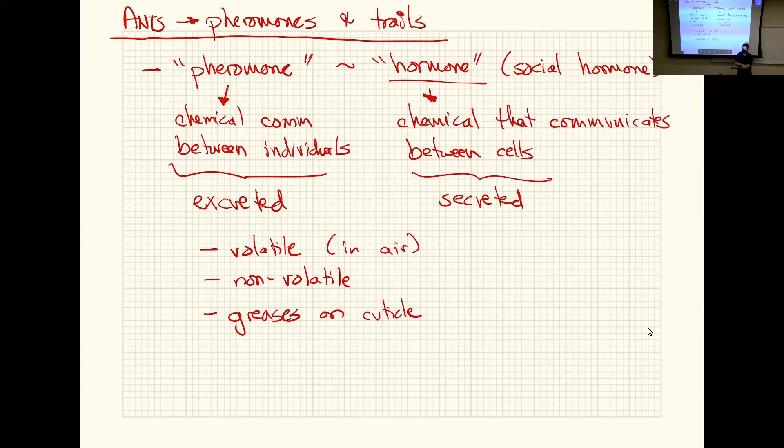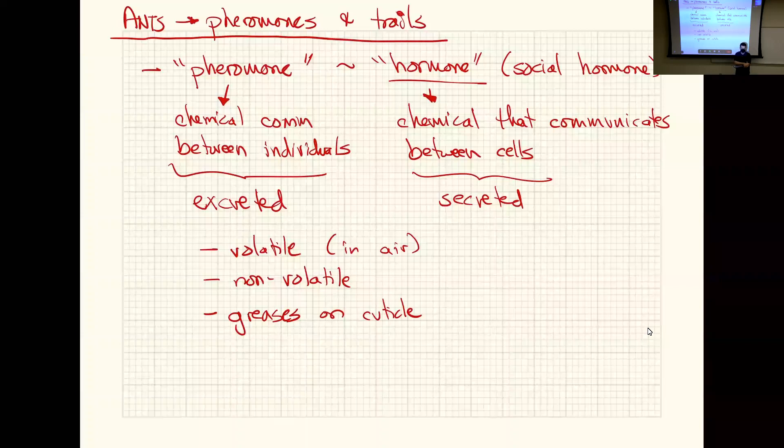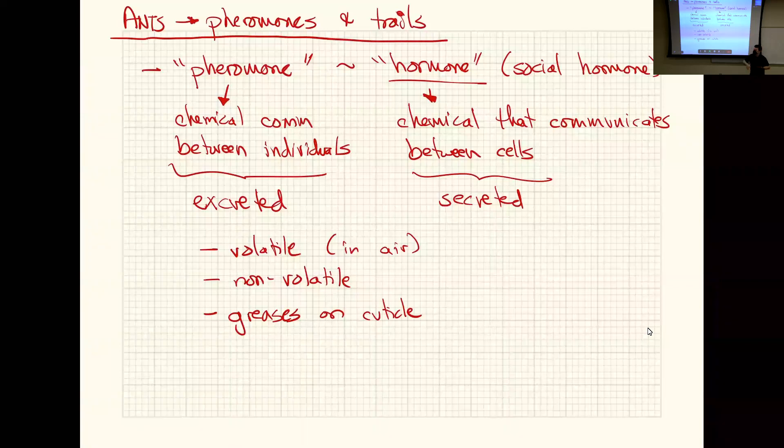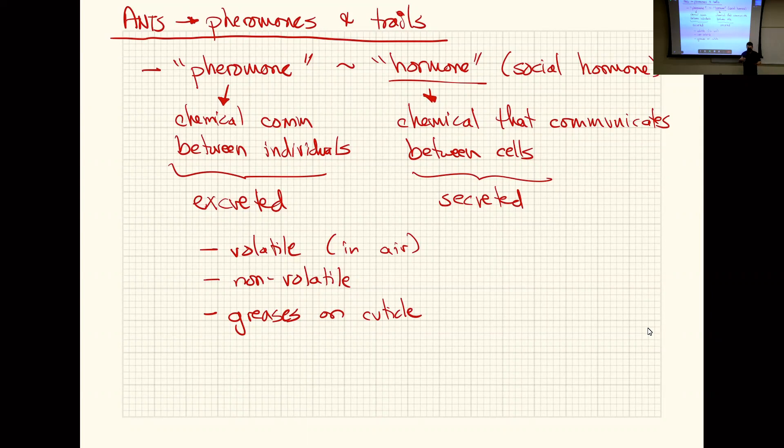A pheromone is basically chemical communication between individuals. These are secreted and excreted, but it's the same basic idea. Instead of my endocrine system talking through one organ to another, you can think of my endocrine system talking to your system. That's what pheromones do. A lot of animals use pheromones, a lot of social insects use them quite a bit more than we do. These can be volatile, imagine them in air, but they also can be non-volatile. For example, there could be greases on cuticle. Every insect is covered with a cuticular hydrocarbon, and it's just a grease.